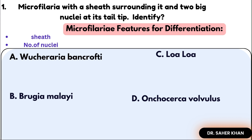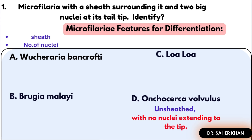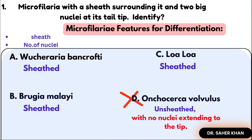Out of the four options, Oncocerca is the only one without a sheath, so we can easily rule out option D right away. Now let's focus on the other three options — they all have a sheath, so the differentiation between them will be based on number of nuclei.